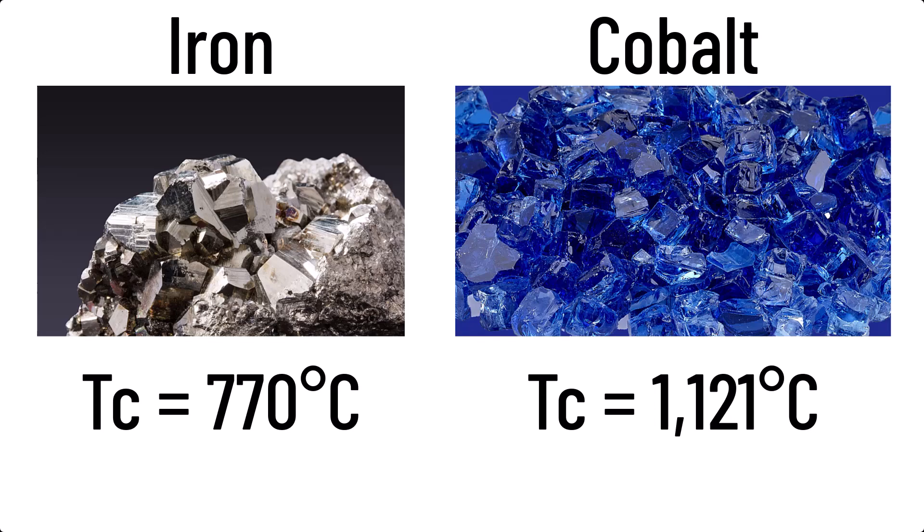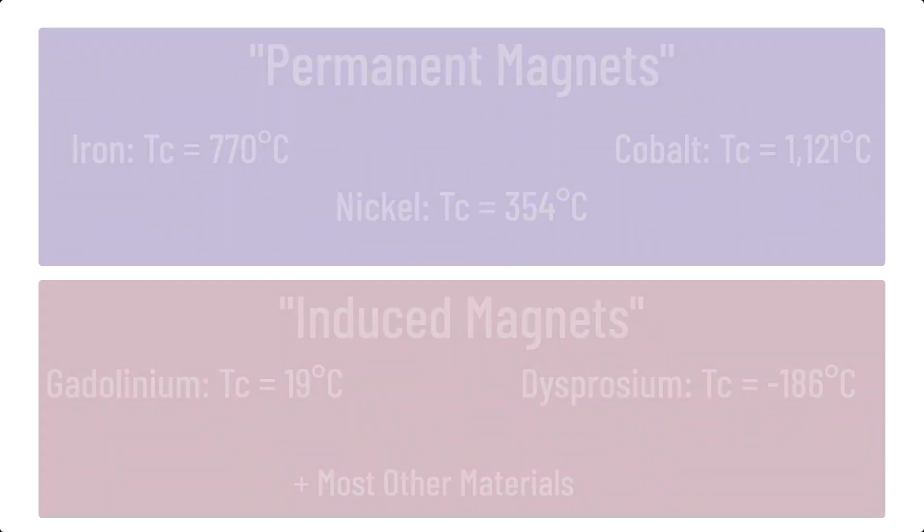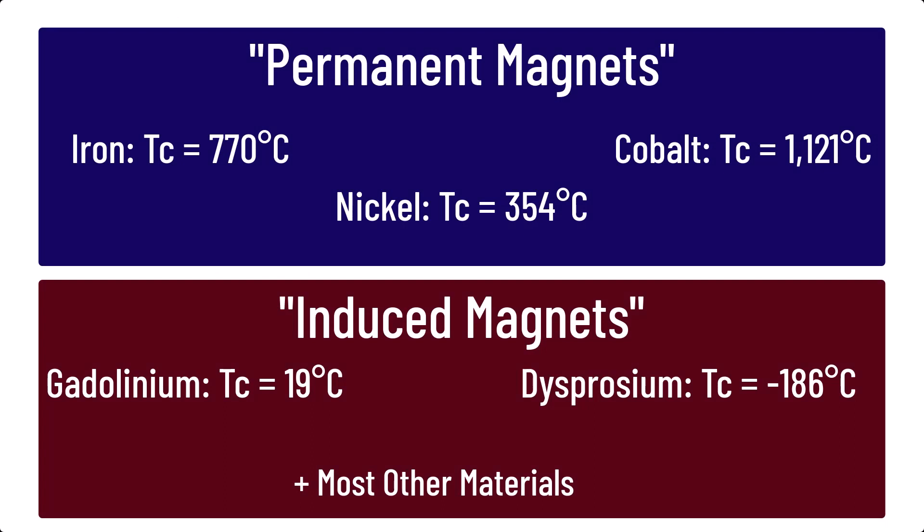The reason why materials such as iron and cobalt are ferromagnets is due to their Curie temperatures being much higher than room temperature. However, above those temperatures, they would stop being permanent magnets. The Curie temperature is different for each magnetic material, which is why most metals display paramagnetism at room temperature, but as you cool them down, they will eventually behave as ferromagnets.